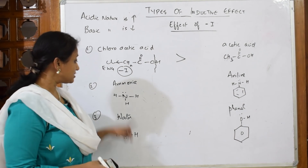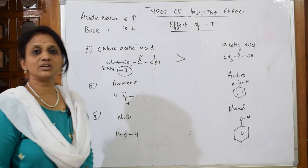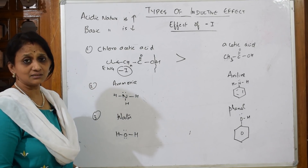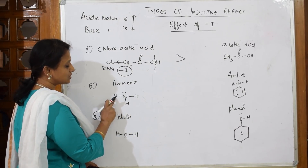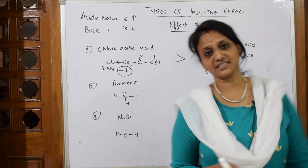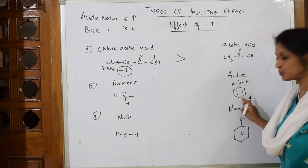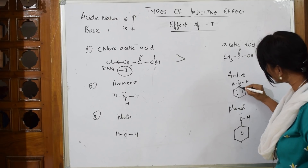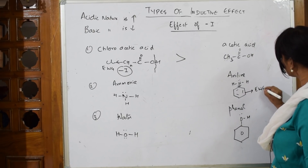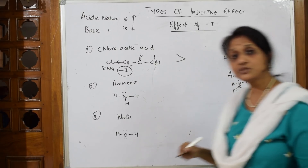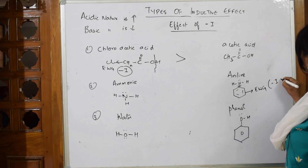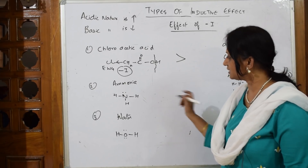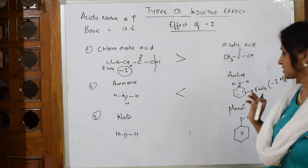Both ammonia and aniline are bases — they have lone pairs and donate them. When comparing, around nitrogen in ammonia there are only hydrogens, but in aniline the benzene ring is an electron withdrawing group. The phenyl group drags electron density away from nitrogen, so the minus-I effect is stronger in aniline. Therefore ammonia is more basic than aniline.